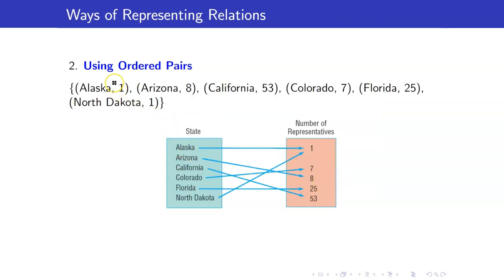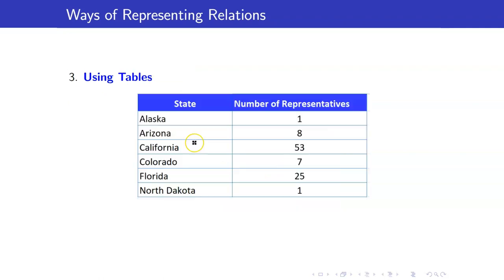Another way of representing relations is using ordered pairs. For example, I have the same diagram from our previous slide and we represent this as the ordered pairs: Alaska, 1 because Alaska goes to 1. We have Arizona, 8 because Arizona corresponds to 8. Colorado, 7, and so on.